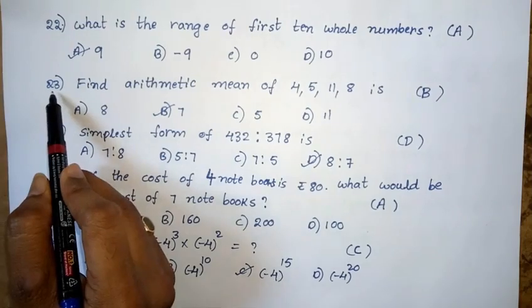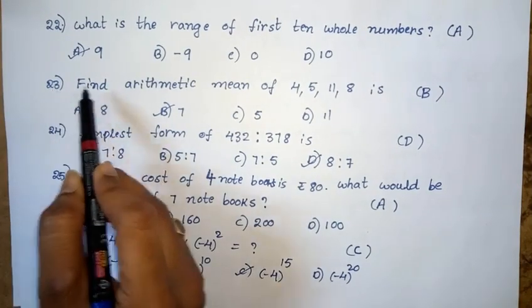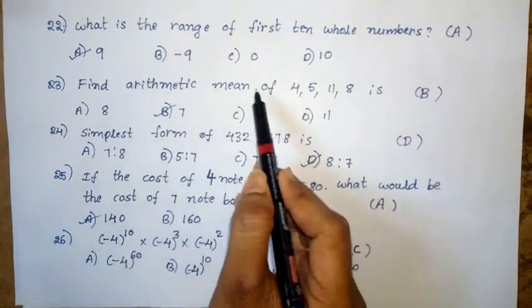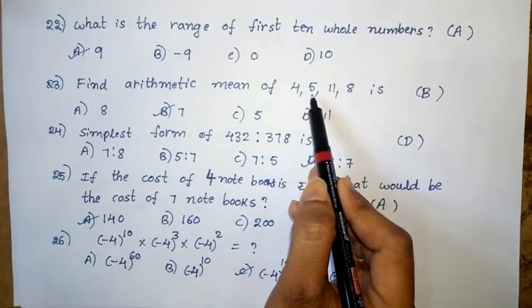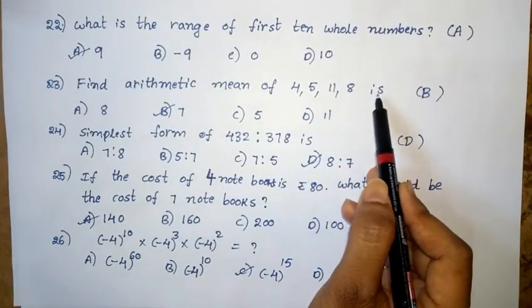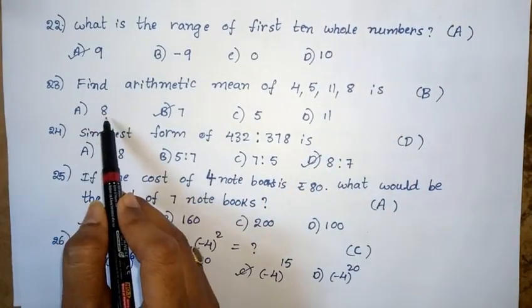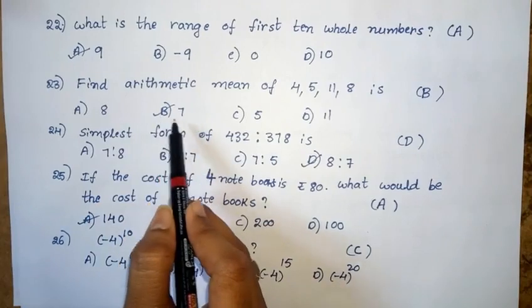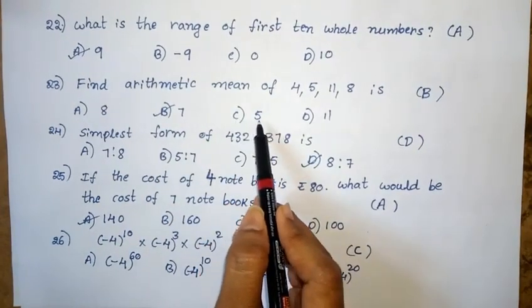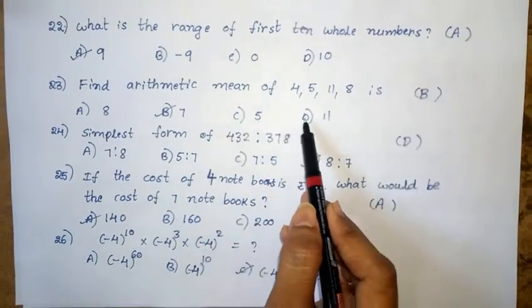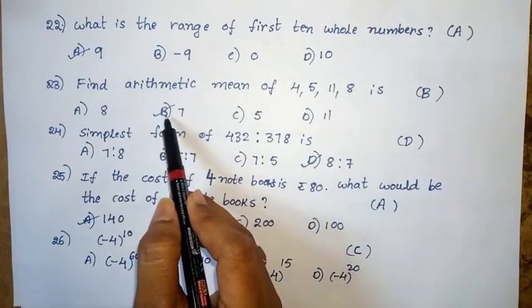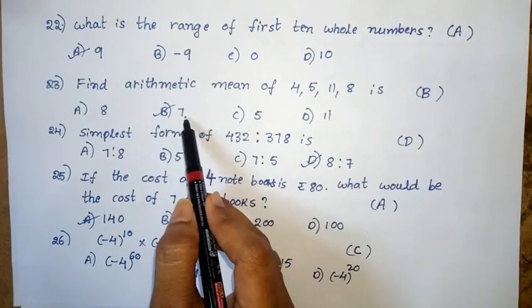Twenty-third question: Option A: 8. Option B: 7. Option C: 5. Option D: 11. The right answer is option B — 7.